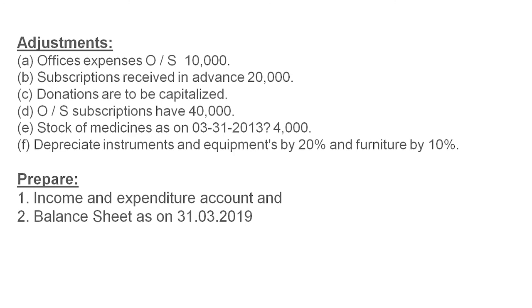The adjustments are: office expenses outstanding should be added to office expenses; subscriptions received in advance are prepaid and should be adjusted; donations are to be capitalized, so they go under capital in the balance sheet; outstanding subscription is 40,000 per year; stock of medicines (closing stock) is 4,000; depreciate instruments and equipment by 20% and furniture by 10%. Prepare the income and expenditure account and balance sheet as on 31-3-2019.